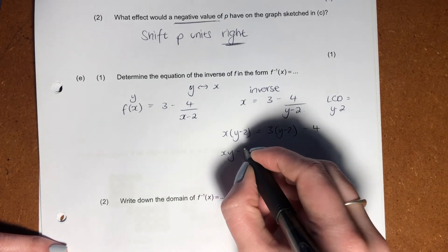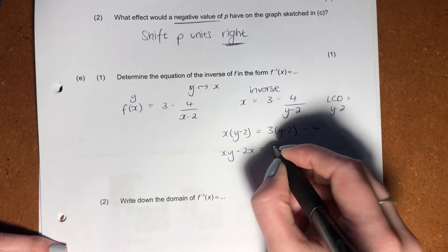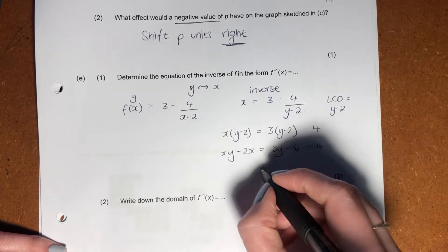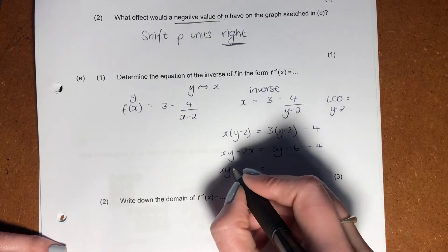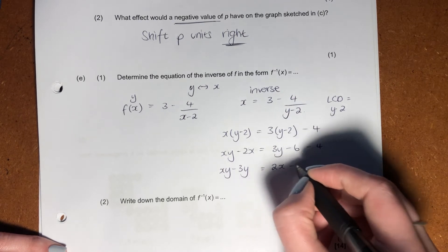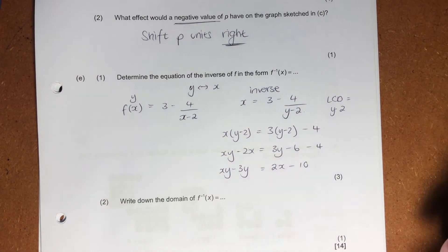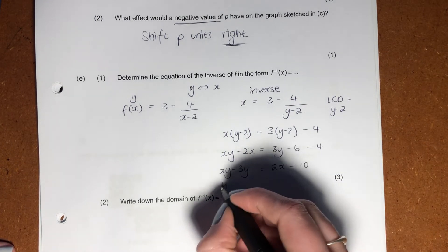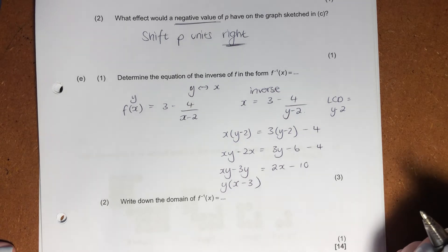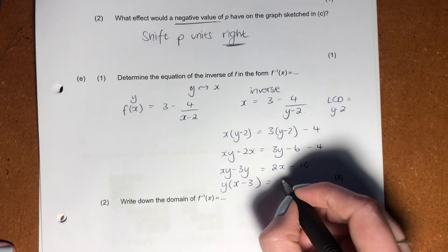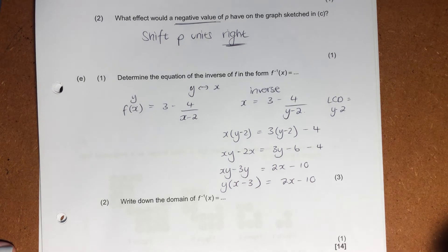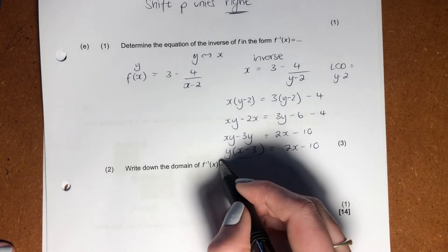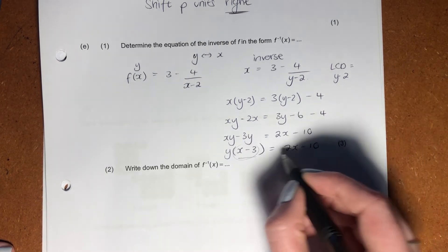Let's then go and times this out. Please make sure your algebra is good. Put all the y's on this side because that's what we want. Put all the x's on this side. That's what we have there. And then what we're going to do now is we want to get y by itself, factorize it out.